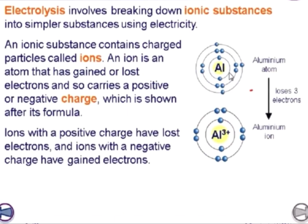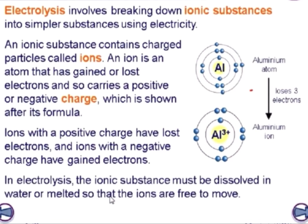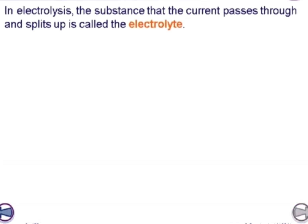Aluminum loses 3 electrons and forms the aluminum ion Al³⁺. Ions with a positive charge have lost electrons and ions with a negative charge have gained electrons. Aluminum is therefore known as the aluminum ion, or cation. In electrolysis, the ionic substance must be dissolved in water or melted so that the ions are free to move. The substance that the current passes through and splits up is called the electrolyte.